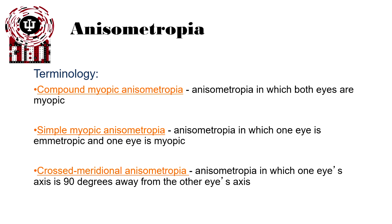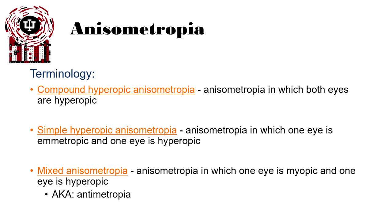Let's look at some terminology. Compound myopic anisometropia is anisometropia in which both eyes are myopic. Simple myopic anisometropia is when one eye is emmetropic and the other is myopic. Crossed meridional anisometropia is anisometropia in which one eye's axis is 90 degrees away from the other eye's axis. Compound hyperopic anisometropia is when both eyes are hyperopic. Simple hyperopic is when one eye is hyperopic and one is emmetropic. And finally, mixed anisometropia — anisometropia in which one eye is myopic and one eye is hyperopic — also known as antimetropia.